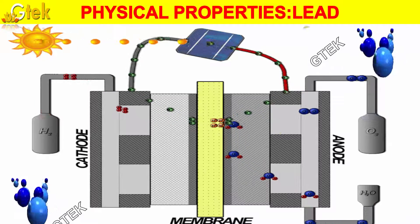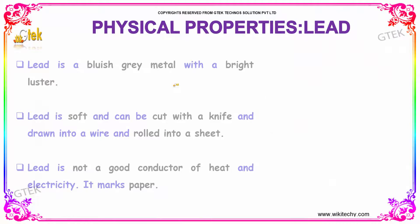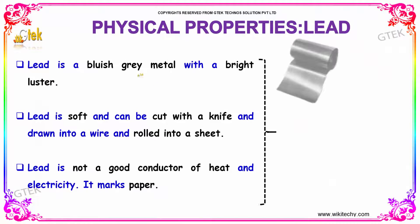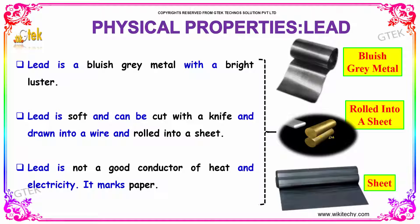Let's discuss the physical properties of lead. Lead is a bluish-gray metal with a bright luster. It is soft and can be cut with a knife, drawn into a wire, and rolled into a sheet. Lead is not a good conductor of heat and electricity, and it marks paper.